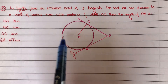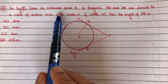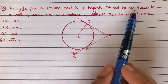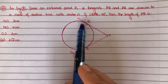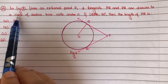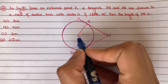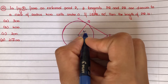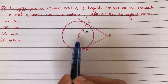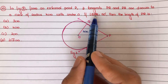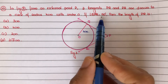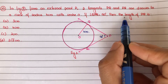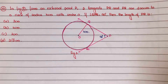Question number 10: In figure 3, from an external point P, two tangents PQ and PR are drawn to a circle of radius 4 centimeter. O is the center of the circle, so OQ radius equals 4 centimeter. If angle QPR equals 90 degrees, then find the length of PQ.